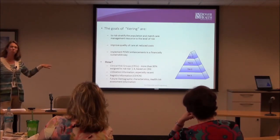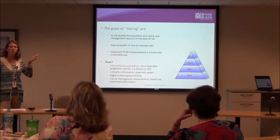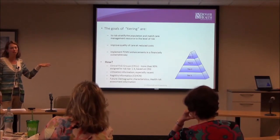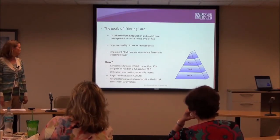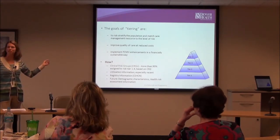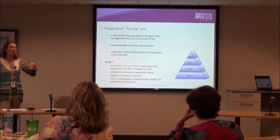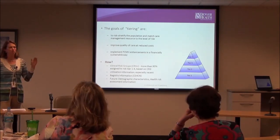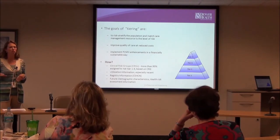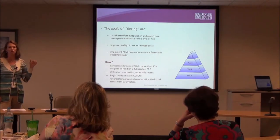We also had existing work on high-risk populations, including a children's special healthcare needs registry, and we leveraged that to determine tier placement. We did experiment with using diabetes and hypertension registries early on, but we abandoned that because it created too much movement between tiers. We use those as a trigger for action, not for tier assignment, since people move in and out of control frequently.